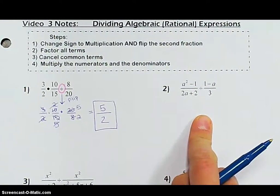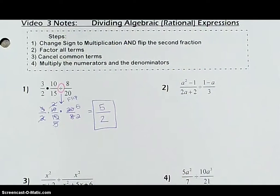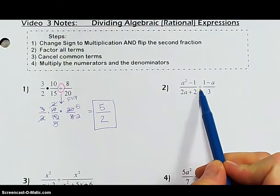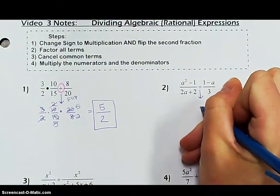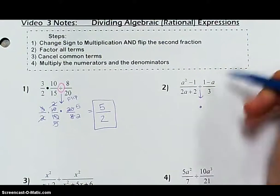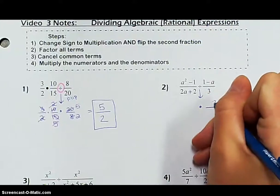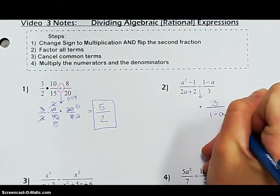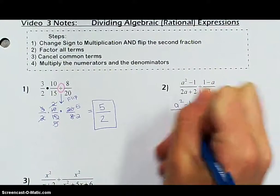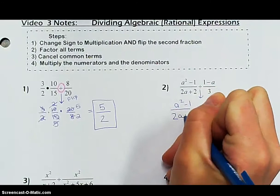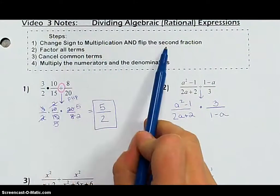Now let's try it with algebraic expressions. Looking at number 2, we see that it is division, which means we're going to change this to multiplication and flip the second fraction. So our second fraction is going to be 3 over 1 minus a, and the first fraction stays exactly the same.